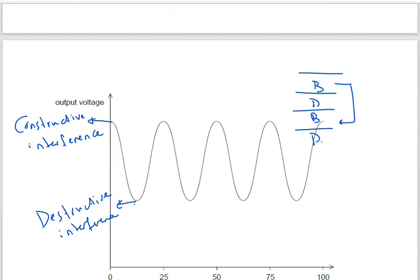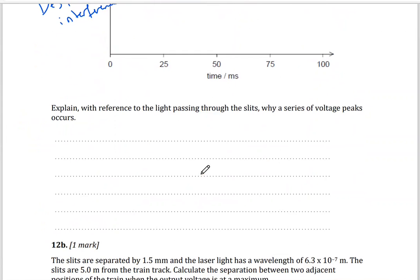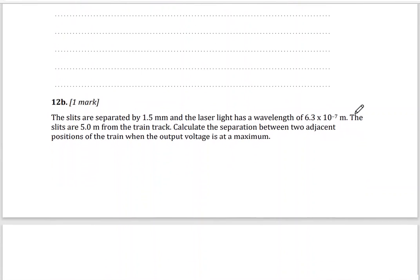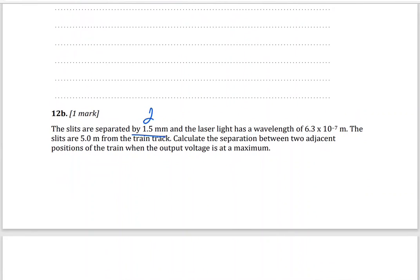The distance between two bright fringes is S. The question asks us to explain, with reference to path difference of light passing through the slits, why we have a series of voltage peaks — because we will have constructive interference. The slits are separated by distance d = 1.5 mm, the wavelength is 6.3 × 10⁻⁷ m, and capital D is 5 meters. We need to calculate the separation S between two adjacent positions of the train when the output is maximum.